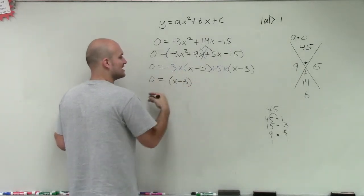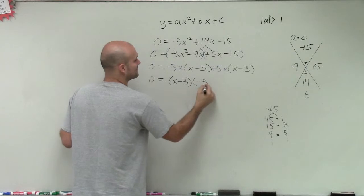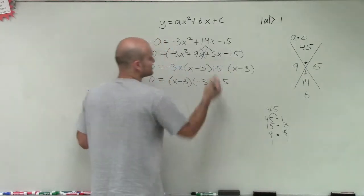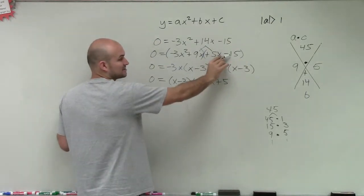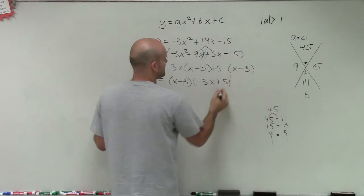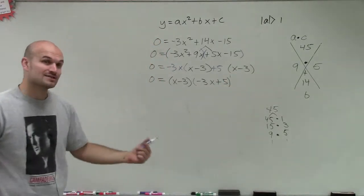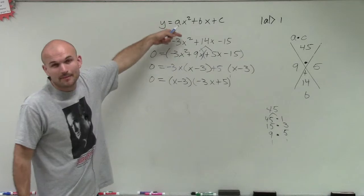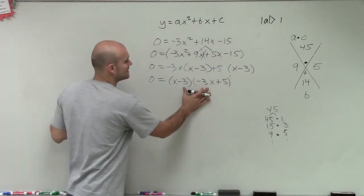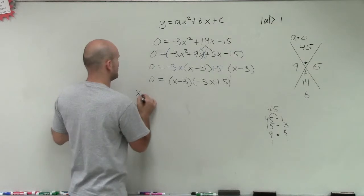Then you factor out what they have in common, which is x minus 3. So let's factor that out. So now when I factor out x minus 3, I'm left with negative 3x plus 5. I can only factor out a 5, not a 5x, because this doesn't have an x. Now I have a product of two factors. And you can notice that when I multiply these two, I'm going to get back this solution. So now, since this multiplies in there and it equals 0, I can apply the zero product property.